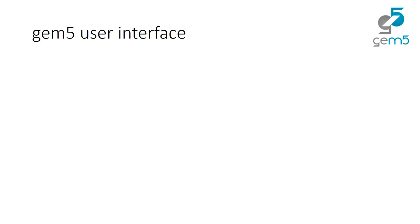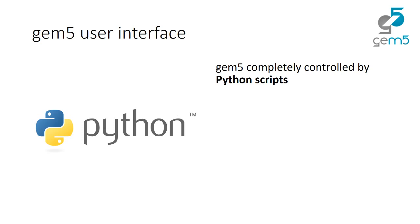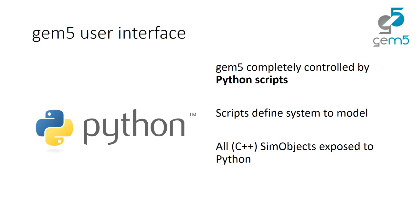The user interface to gem5 is Python. You write a Python script to control gem5 — that is the interface, not a command line interface. In these scripts you fully define the system you want to model: CPUs, caches, etc. All the C++ objects in the gem5 source are exposed to Python, so you instantiate objects, configure them, and run the simulation entirely via Python.